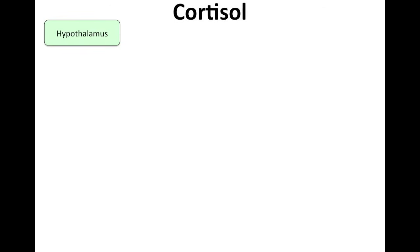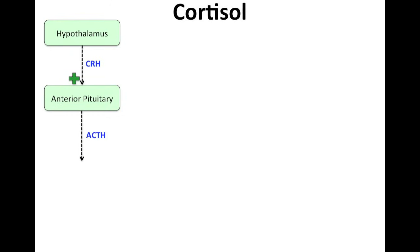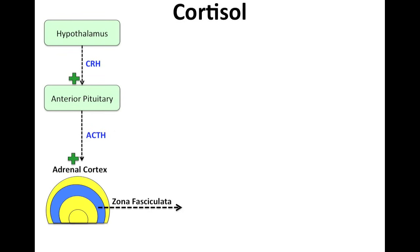As we know, the hypothalamus releases corticotropic releasing hormone, or CRH, which has a positive effect on the anterior pituitary. The anterior pituitary then releases ACTH, or adrenocorticotropic hormone, which has a positive effect on the adrenocortex — more specifically, the zona fasciculata. This causes increased production and secretion of cortisol.